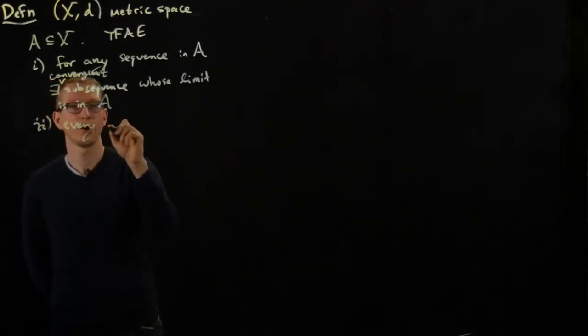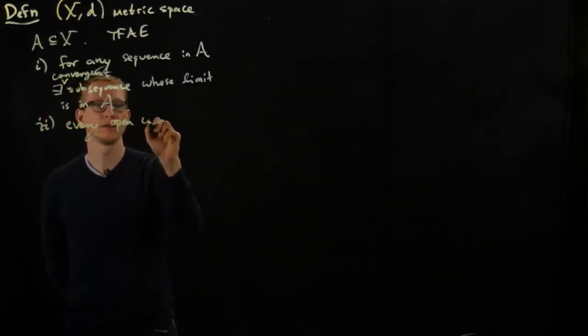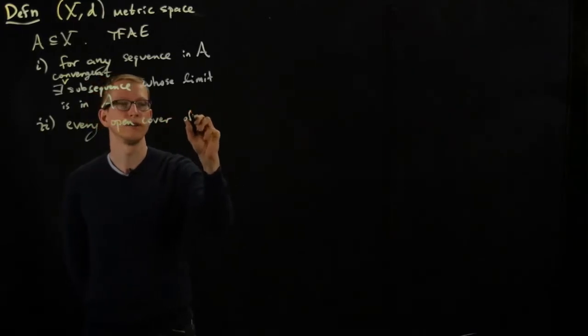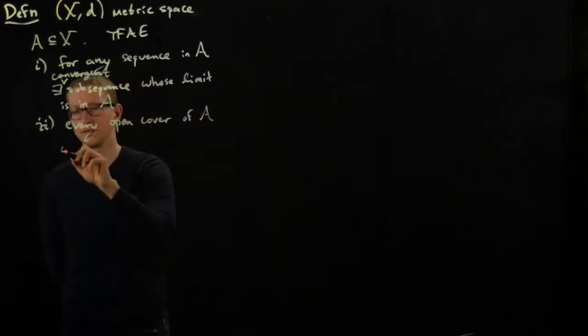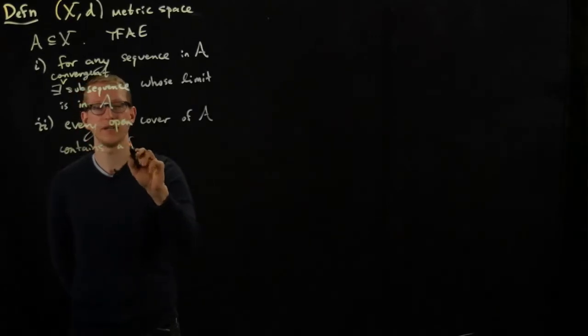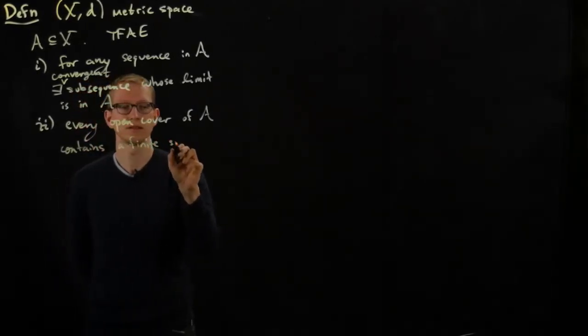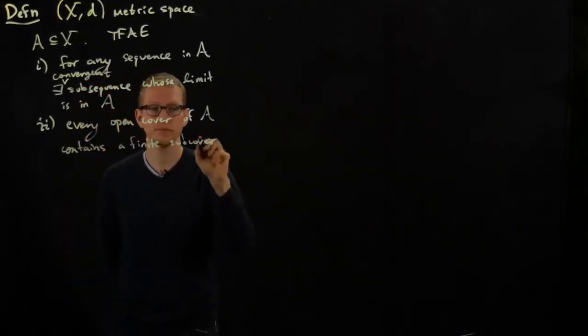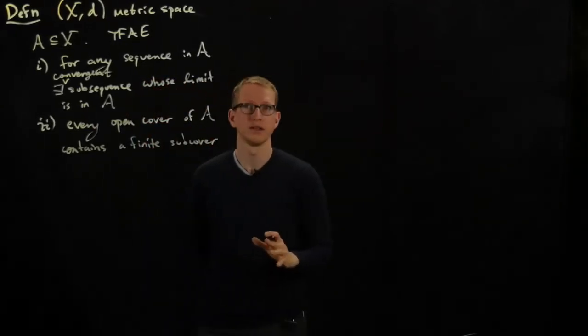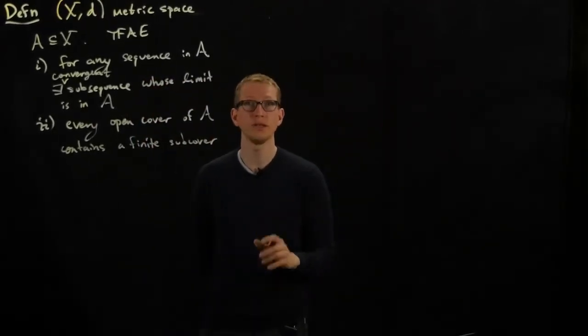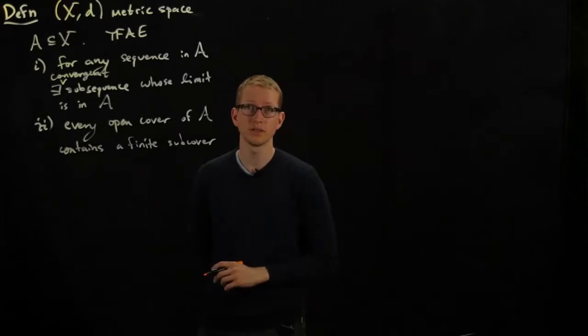Every open cover of A contains a finite subcover. This is another characterization of what it means for a subset of Euclidean space to be compact.